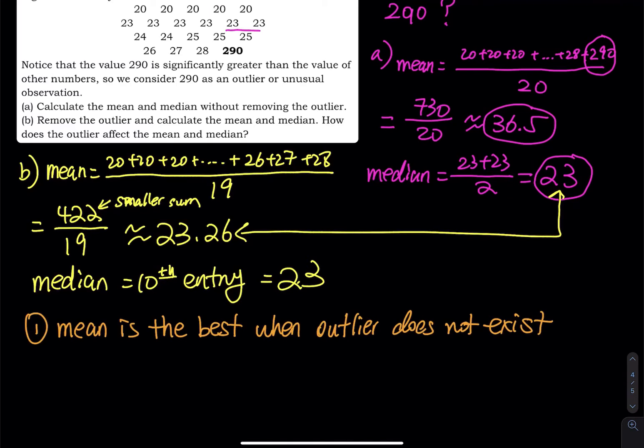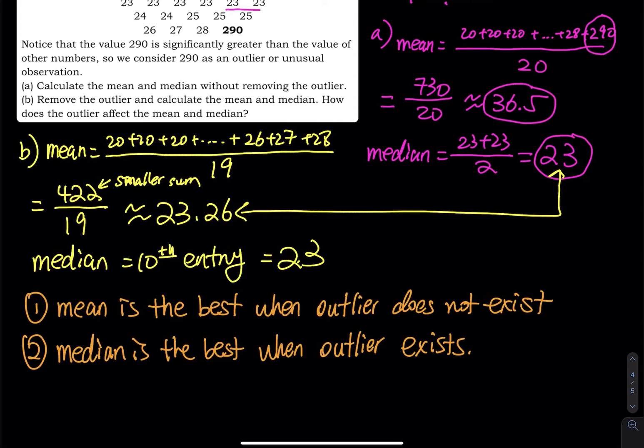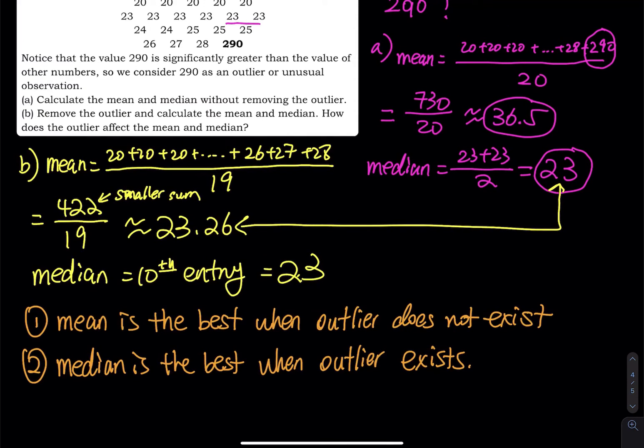So when outlier exists, number two, median is the best when outlier exists, one or more. So just like in this problem, when there is an outlier 290, the mean is no longer accurate when you take the 290 into account. So when there is an outlier, don't worry about that, the mean is not going to be too accurate, we use the median.